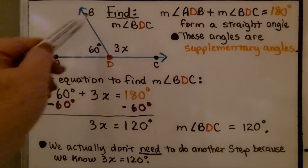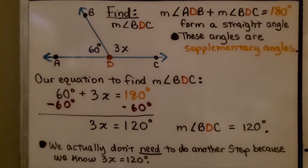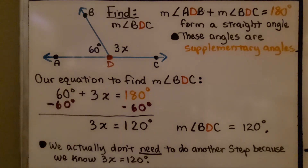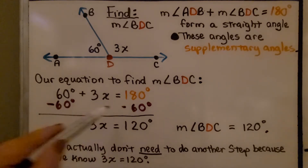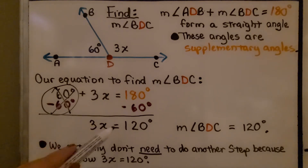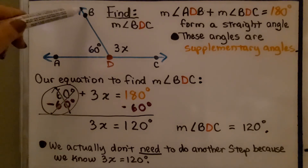These angles are supplementary angles. So our equation to find the measure of angle BDC is: 60 degrees plus 3x is equal to 180 degrees. We use inverse operations — we subtract 60 from each side of the equation to eliminate it, and we're left with 3x is equal to 120 degrees. So we know the measure of angle BDC is 120 degrees.